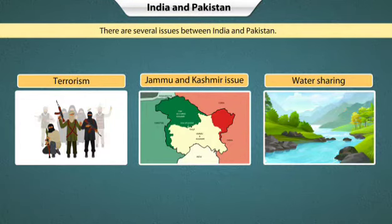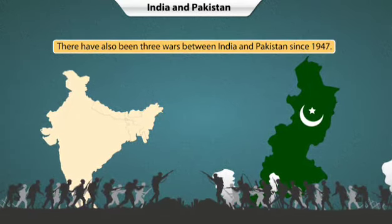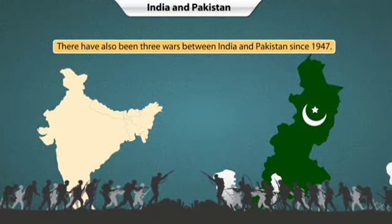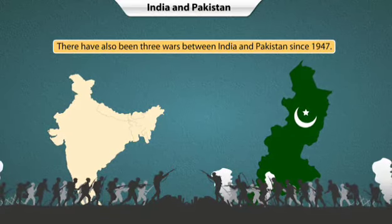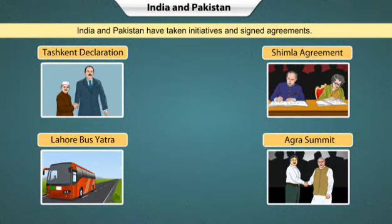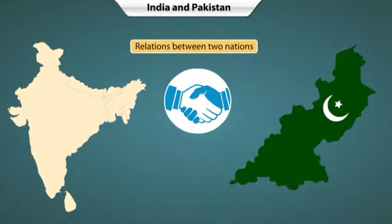Sometimes the intensity of these issues has resulted in a fight between India and Pakistan. There have also been three wars between India and Pakistan since 1947. To improve relations, both countries have taken initiatives and signed agreements: the Tashkent Declaration, Shimla Agreement, Lahore Bus Yatra and Agra Summit. However, these agreements have not helped much to improve relations between the two nations.